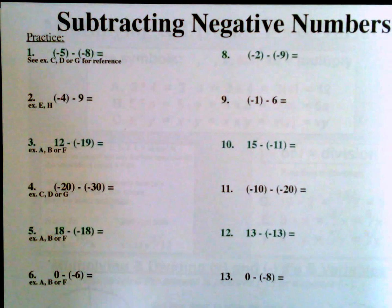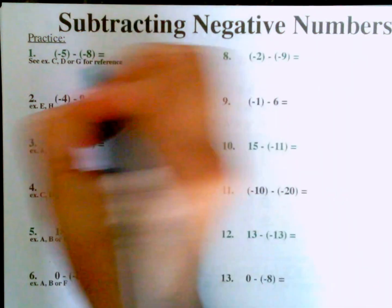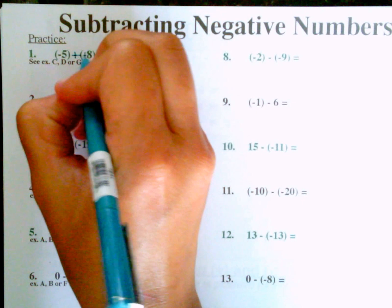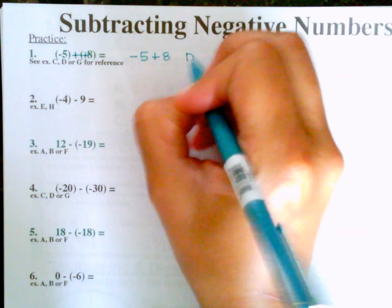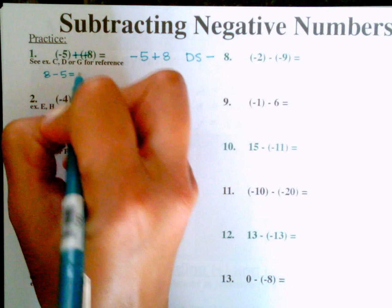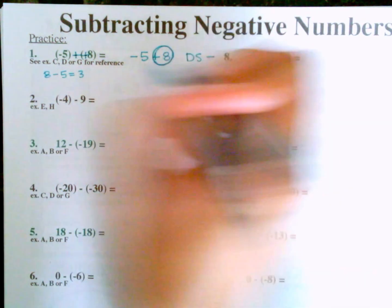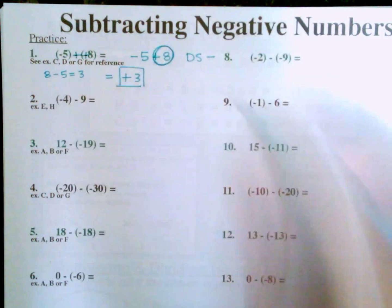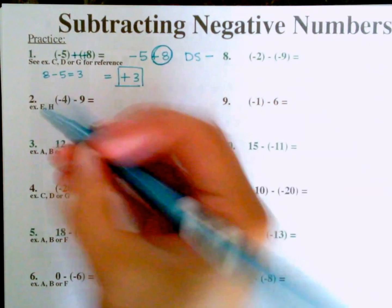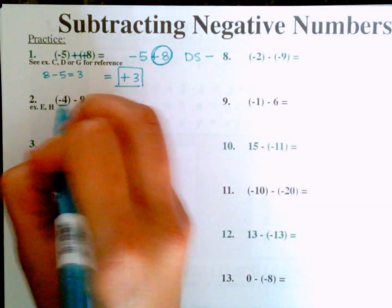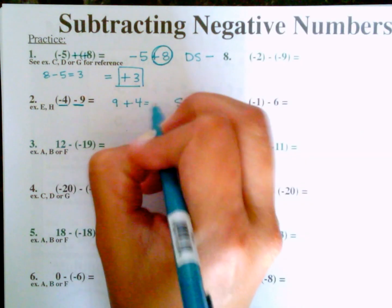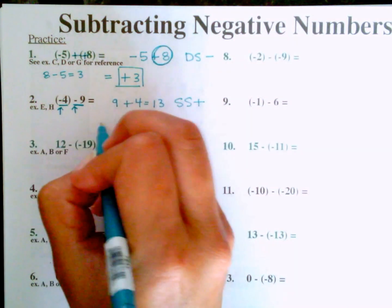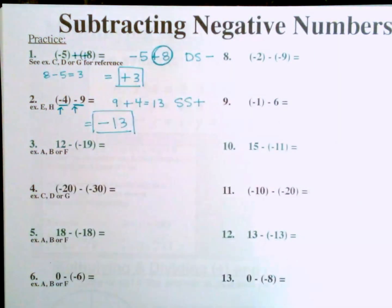Subtracting negative numbers practice — page seven of the book. Number one: negative five minus negative eight — these immediately become plus positive, so rewrite as negative five plus eight. Different signs, so subtract: eight minus five equals three. The larger number is positive so the answer is positive three. Number two: negative four minus nine — same sign, so add: nine plus four equals thirteen, and adding two negatives makes a larger negative, so negative thirteen.